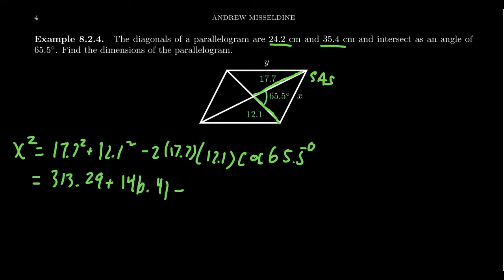We then take 2 times 17.7 times 12.1. That gives us 428.34. And then we have to compute cosine of 65.5 degrees. I'll do that one in just a second. So let's take the 12.1 squared plus the 17.7 squared. That adds up to give us approximately 459.7.